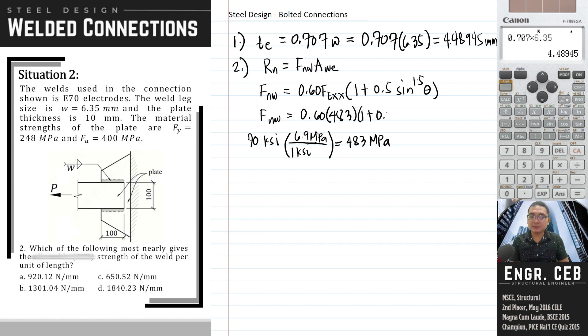Then 1 plus 0.5 sine raised to 1.5, the value of theta is 0 because the welds are longitudinal, meaning the angle between the force applied and the axis of the welds is 0. Therefore the value of f sub nw equals 289.8 megapascals.